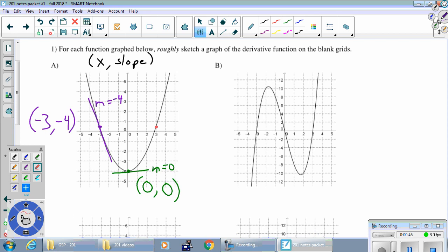And then we'll pick x equals 3. It's probably symmetric. So that means the slope of this one must be positive 4. So when x is 3, the slope is 4.